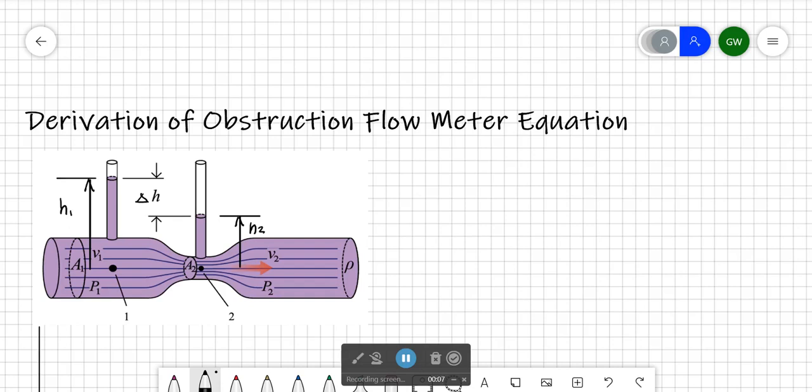We're going to do it for a venturi meter. In this venturi meter, the inlet is at point one.